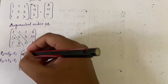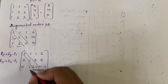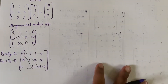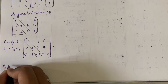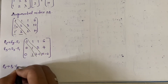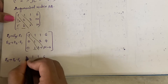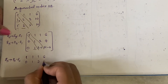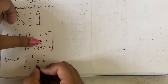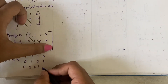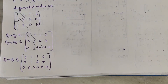Identifying the diagonal again, the only non-zero element below the diagonal is in the third row. To eliminate it, we apply R3 → R3 − R2. The matrix becomes: [1 1 1 | 6 / 0 1 2 | 4 / 0 0 λ−3 | μ−10]. All elements below the diagonal are now zero, so we stop the row reduction process.